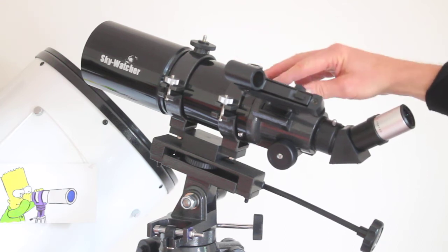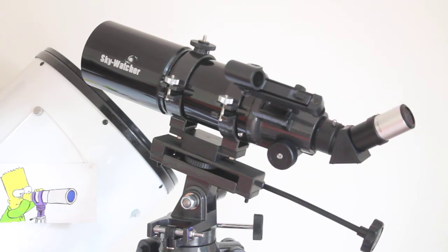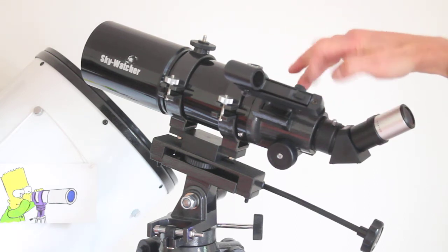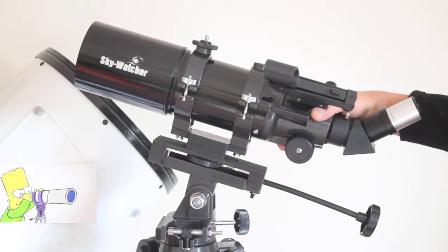This one comes with a red dot finder, but it does come with a standard mount there, so it will accept the Sky-Watcher 6x30 and the 9x50 optical finder scopes, which come in angled or straight.